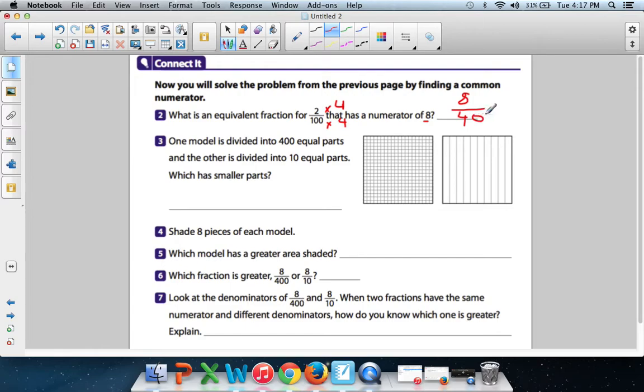Duh. A couple extra zeros. There's our new fraction. 8 over 400. 1 model is divided into 400 equal parts. And the other is divided into 10 equal parts. Which one has smaller parts? The one divided into 400? Or the one divided into 10?